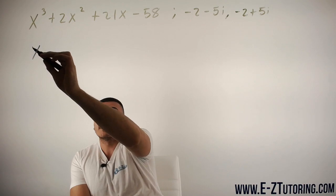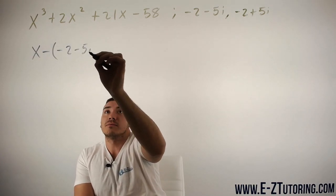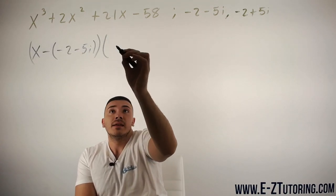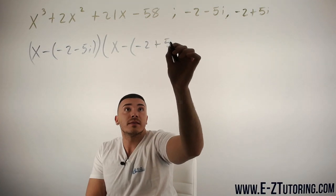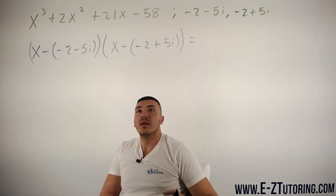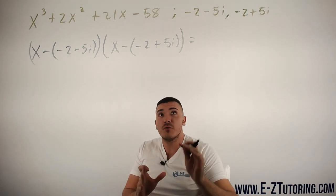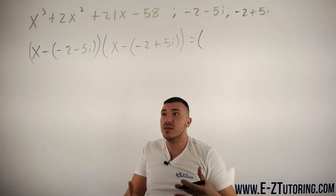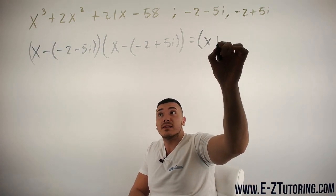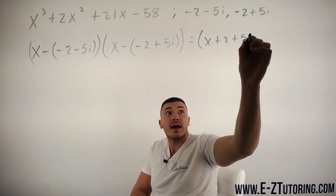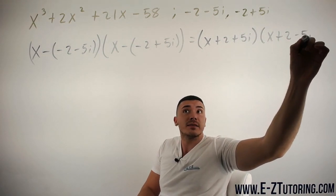So we will have x minus this root, -2-5i, and x minus this root, -2+5i. So we're going to go ahead and multiply these two together. Now, what I'm going to do first is I'm first going to distribute these negatives in there just to make things not so complicated. First one gives us x+2+5i. The next one gives us x+2-5i.